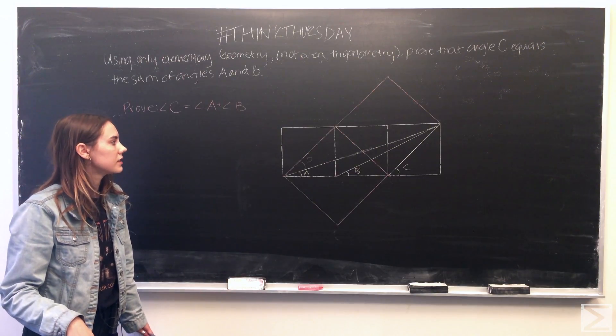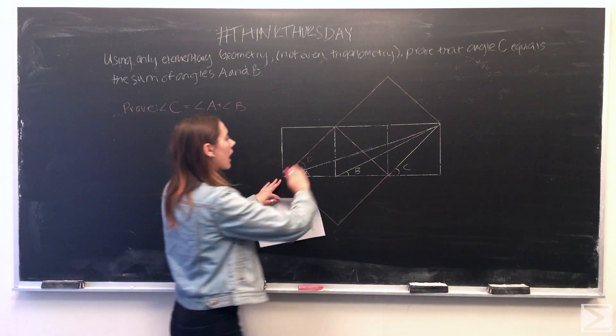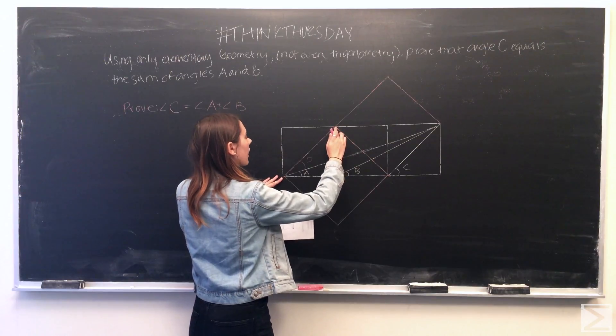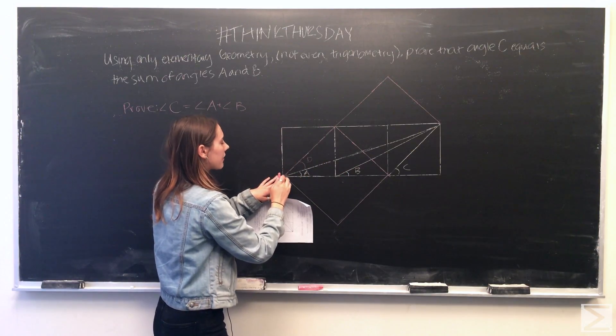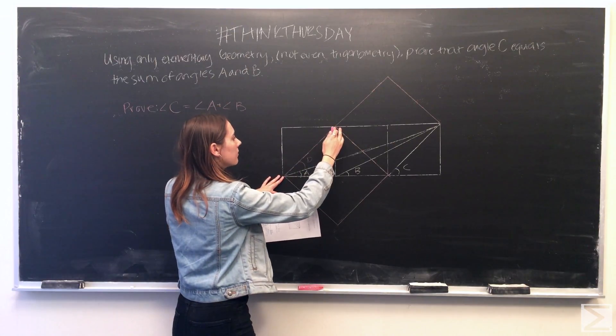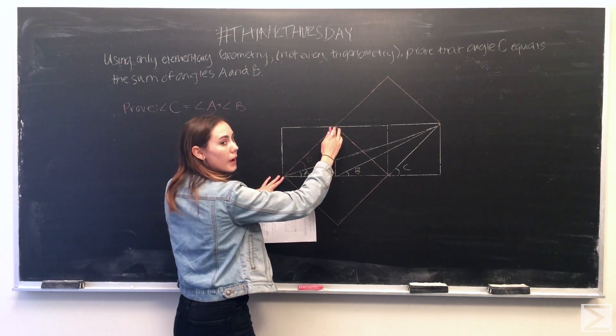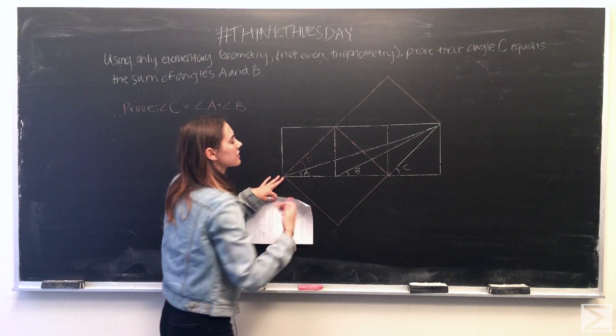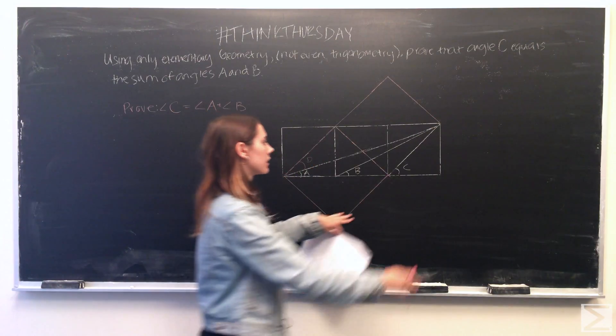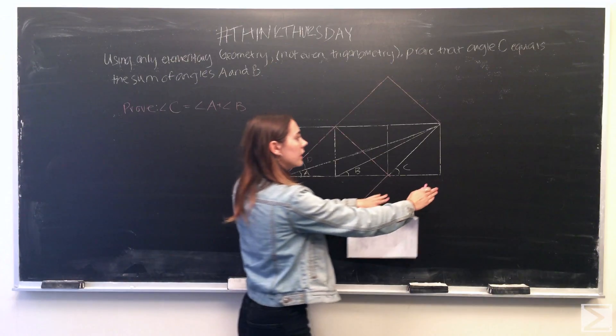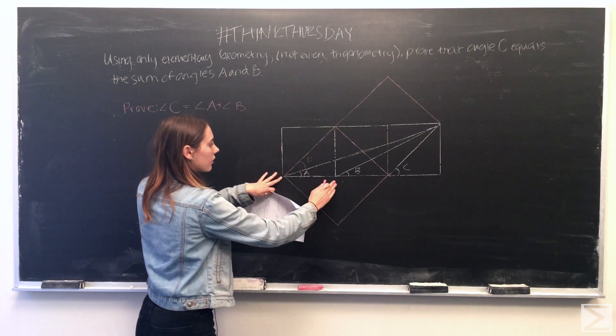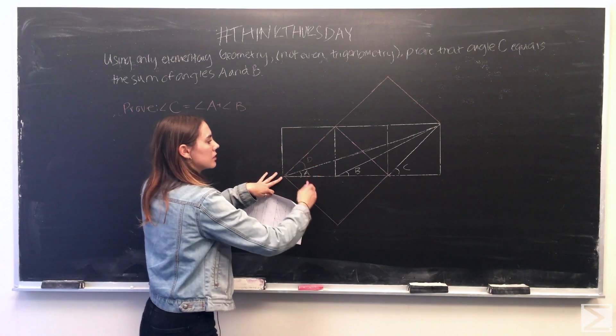And you can see that because using this line that we've constructed across the small square here, what we can see is that this line actually bisects the square by going through the diagonal, which is exactly what angle C does in terms of this smaller square. And we know that these two squares are equal, so therefore angle A plus D must be equal to angle C.